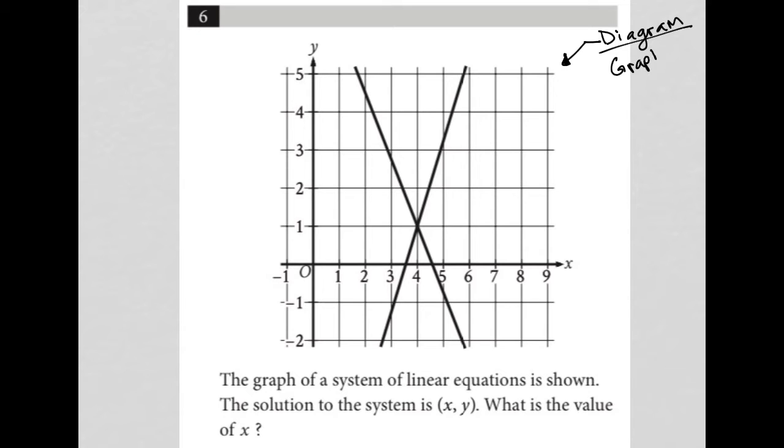Looks like we have two lines in our graph, one here and one there. They intersect here at (4, positive 1).